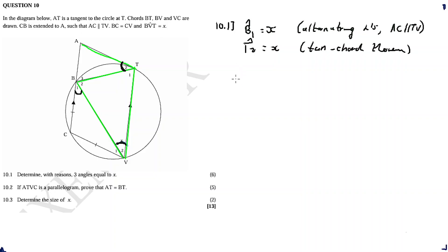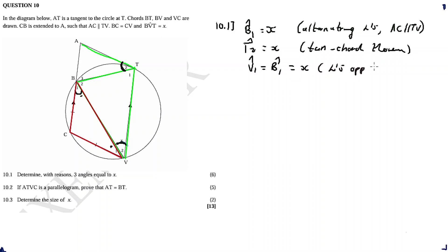The last angle: V1 is equal to B1, and they are both equal to x. Why? We have an isosceles triangle BCV. Triangle BCV is isosceles, which means B1 and V1 are equal because they are angles opposite equal sides. So we now have three angles that are equal to x.